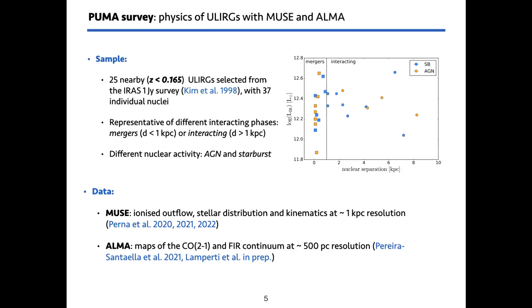The PUMA sample consists of 25 nearby ULIRGs with a redshift below 0.165, selected to be representative of different interacting phases. About half of the sample are advanced mergers with a distance between the nuclei of less than one kiloparsec, and half are classified as interacting where the distance between the nuclei is larger than one kiloparsec.